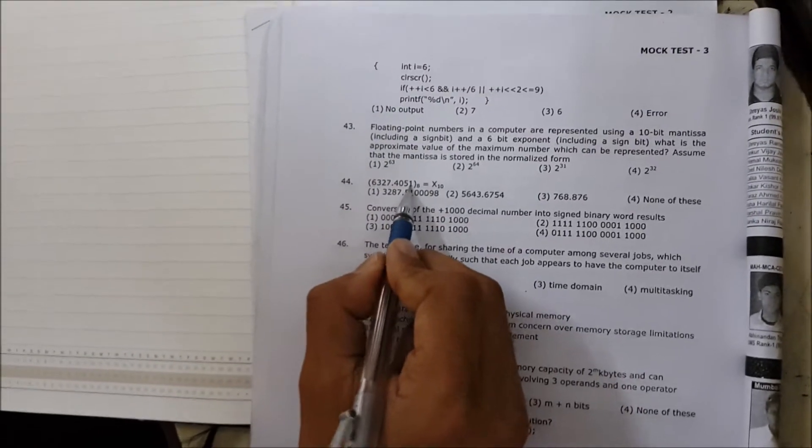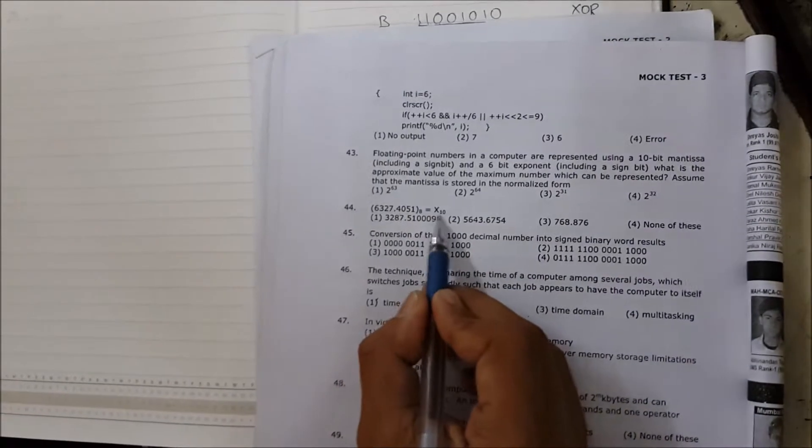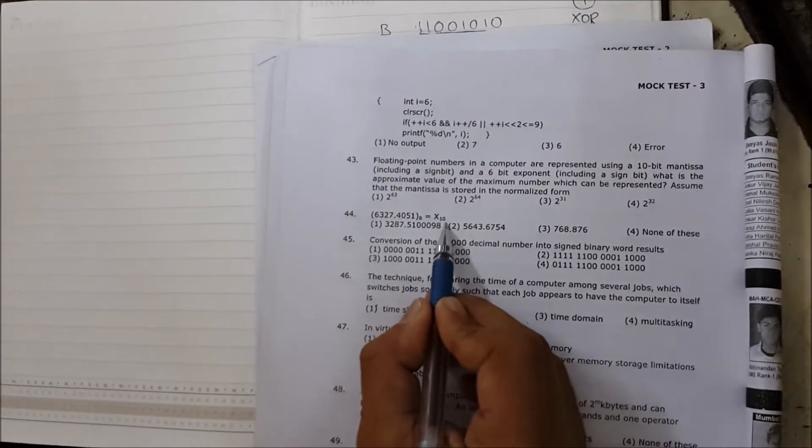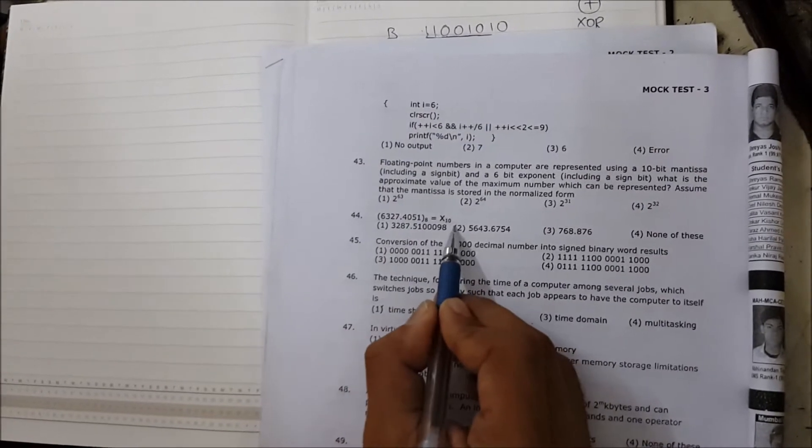7.4051 is in the format of base 8, which means octal. You have to find the decimal format, which is X base 10. To find the decimal format, you need to convert this octal into decimal.